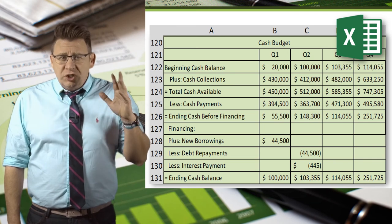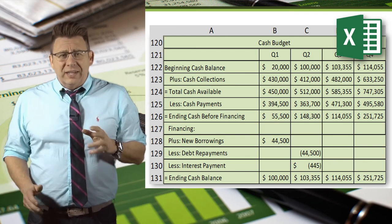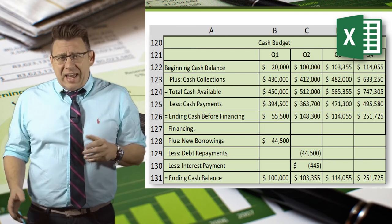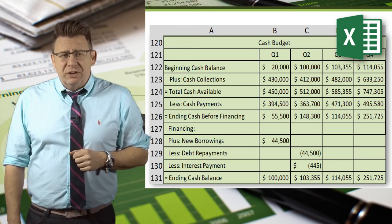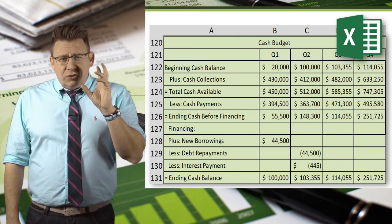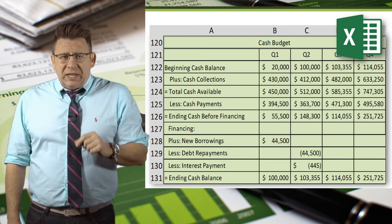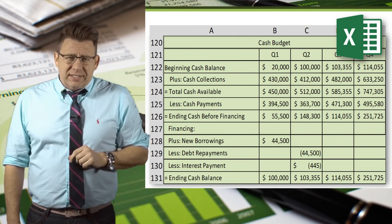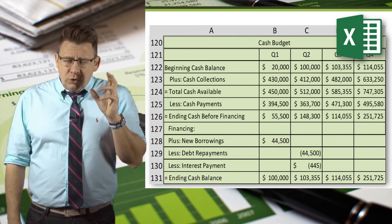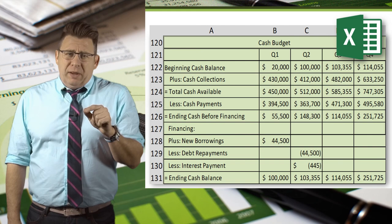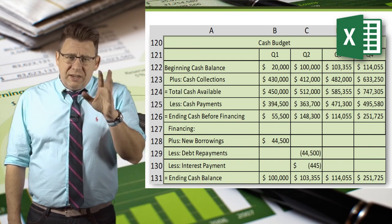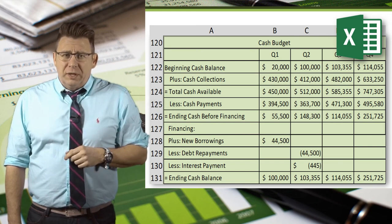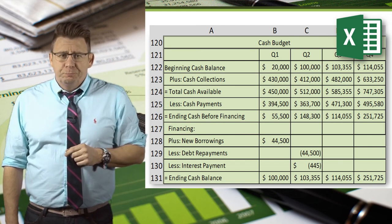Building this budget in Excel is straightforward for collections and payments — those amounts would simply be linked to the related cells in the cash collections and cash payments budgets. The tricky part is the financing section. To truly automate this, you would want to use an IF formula.